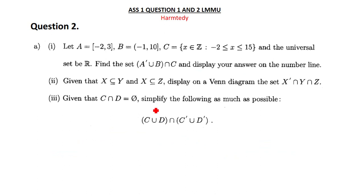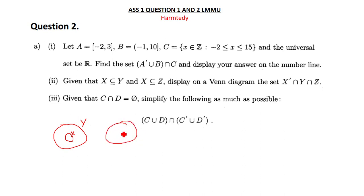Let's move on to the next question. Given that X is a subset of Y, and X is also a subset of Z, display on the Venn diagram the set X complement intersection Y intersection Z. So we need to find X complement intersection Y intersection Z.